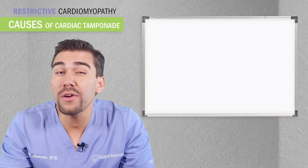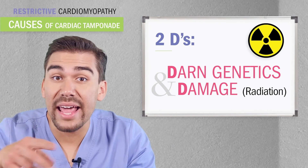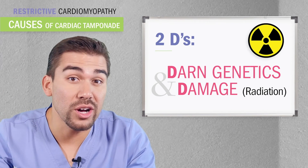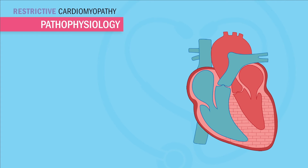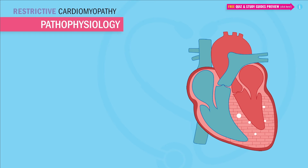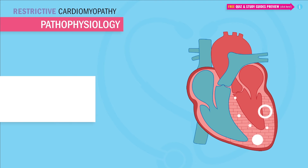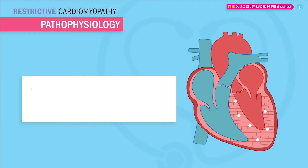The causes of restrictive cardiomyopathy revolve around the two D's: darn genetics and damage to the heart. For genetics, the heart gets hard like a rock from particles that deposit into the heart muscle itself — kind of like bulletproof glass, these deposits of particles make the heart rock hard. When proteins are deposited into the myocardium, the heart muscle, it's called amyloidosis. When small areas of inflamed tissue are deposited, it's called sarcoidosis.